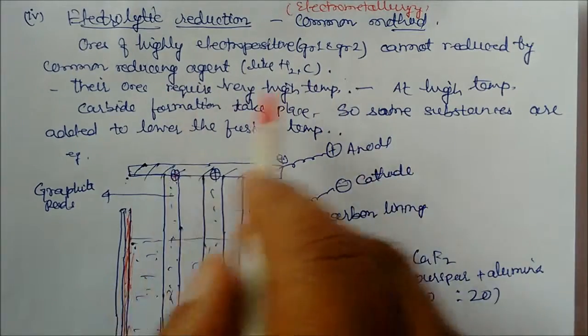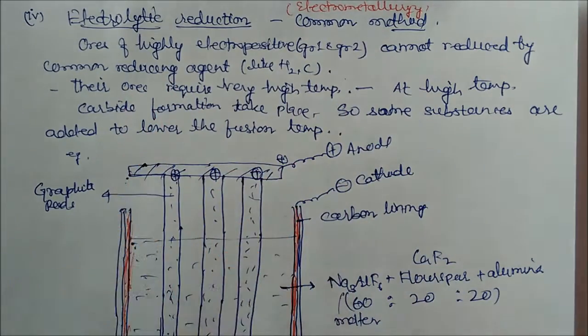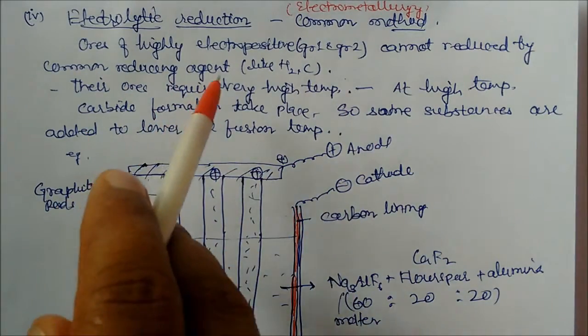These metals, Group 1, Group 2, cannot be reduced because they are highly electropositive. So to reduce them, we require very high temperature to make it molten state.